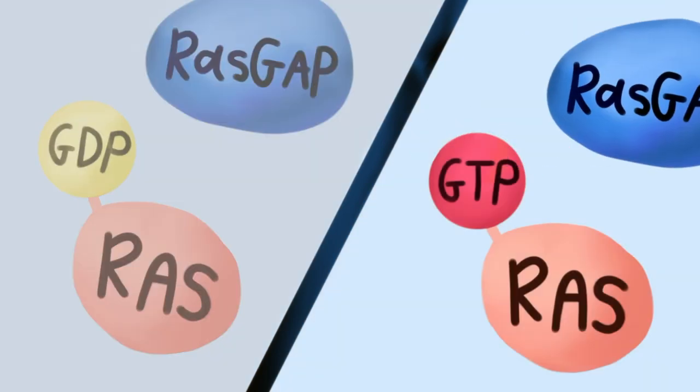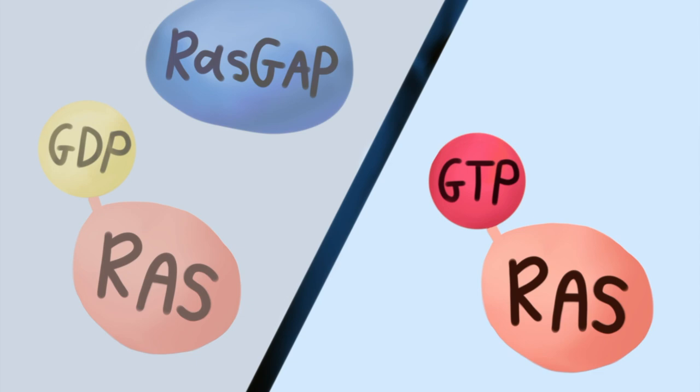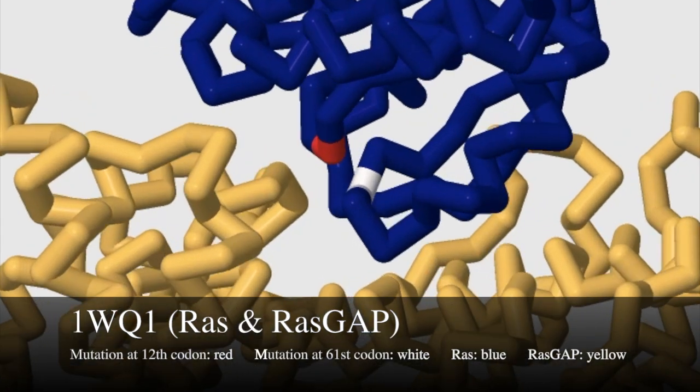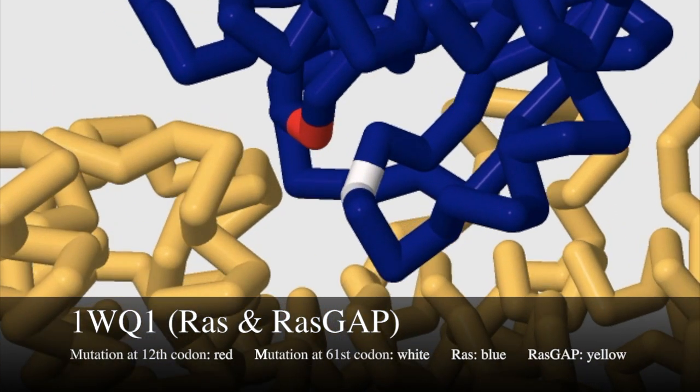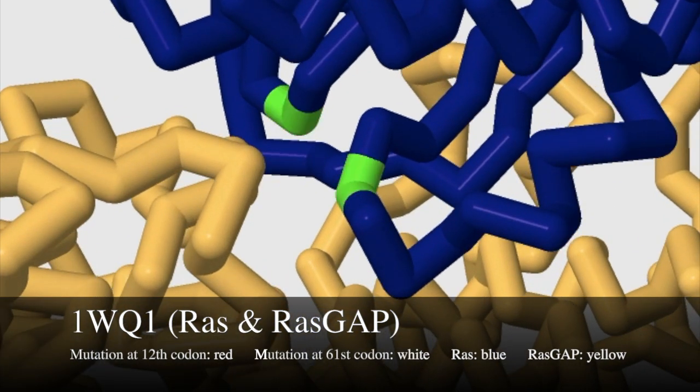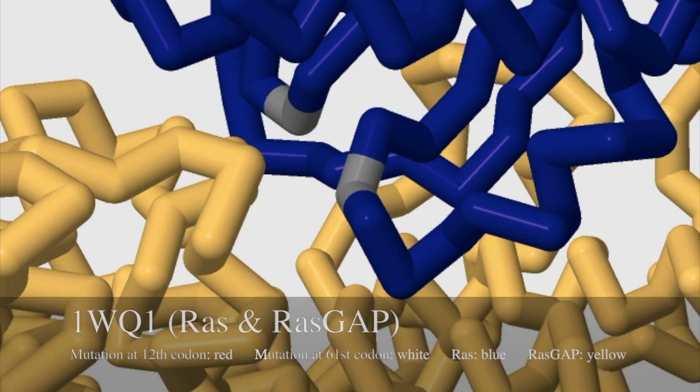However, a mutation in RAS prevents RAS GAP from inactivating RAS, so RAS is constantly in an on state. Common point mutations in RAS responsible for this are at the 12th codon, which is a glycine to valine substitution, and at the 61st codon. An upregulated EGFR/RAS pathway causes excessive amounts of cyclin D to be produced, promoting cell division and resulting in an increased risk of cancer.